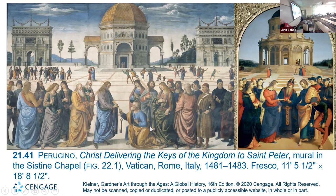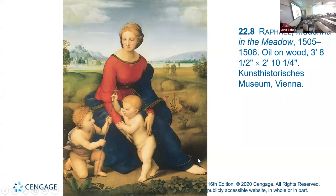You can see the difference: Perugino makes this a very long composition. Raphael, not so much — kind of compact, gets right to the center. Raphael's Madonna in the Meadow — we have St. John the Baptist, the Christ, and the Madonna. We have the invented landscape. See how those mountains in the background are bluish and kind of out of focus? That's atmospheric perspective.